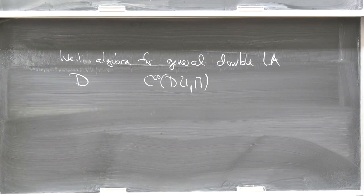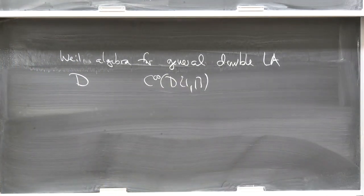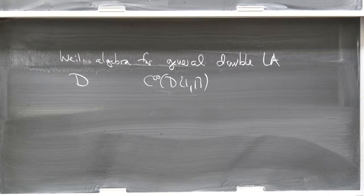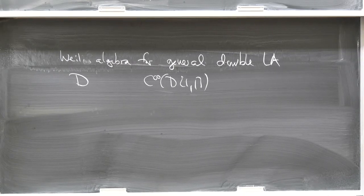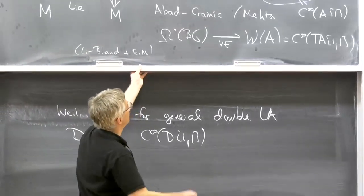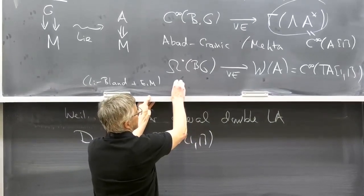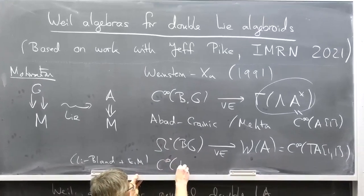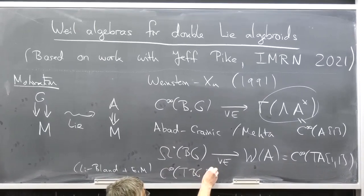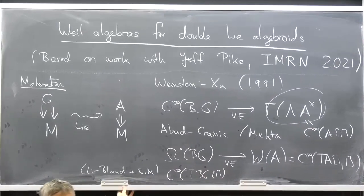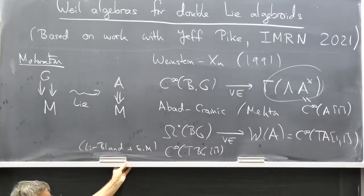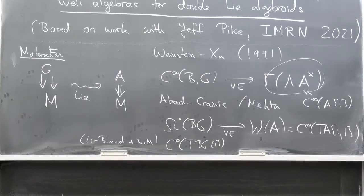Question from the audience: Can you regard the left-hand side as smooth functions on a T[1]-shifted G regarded as a groupoid object in the algebroid? Response: Yes, you could say this is like C-infinity of B(T-shift-one G). That should be right.